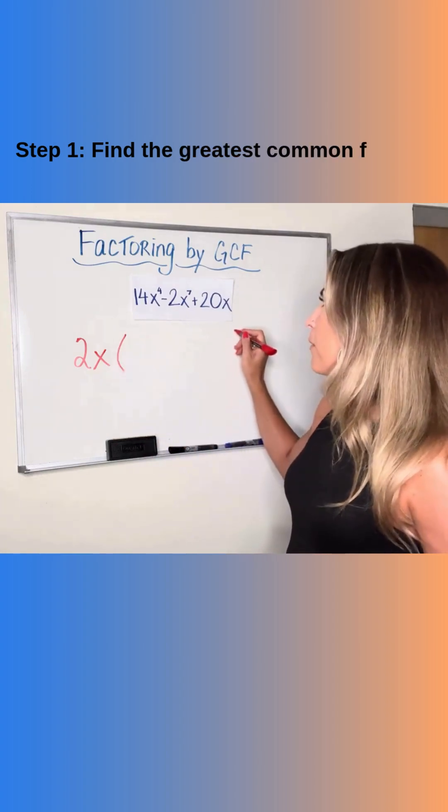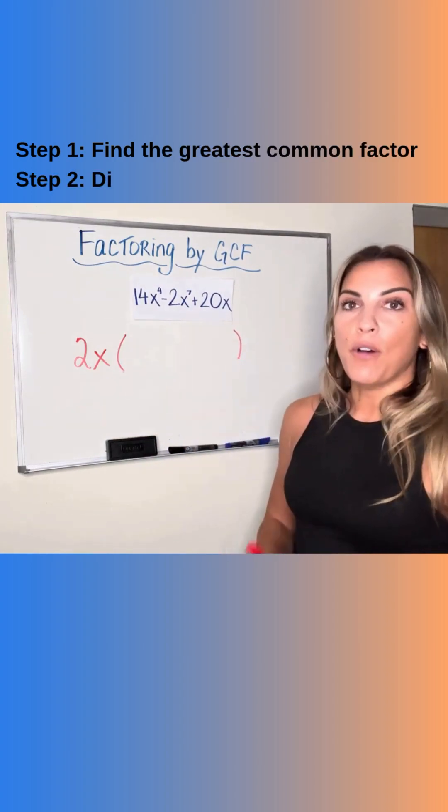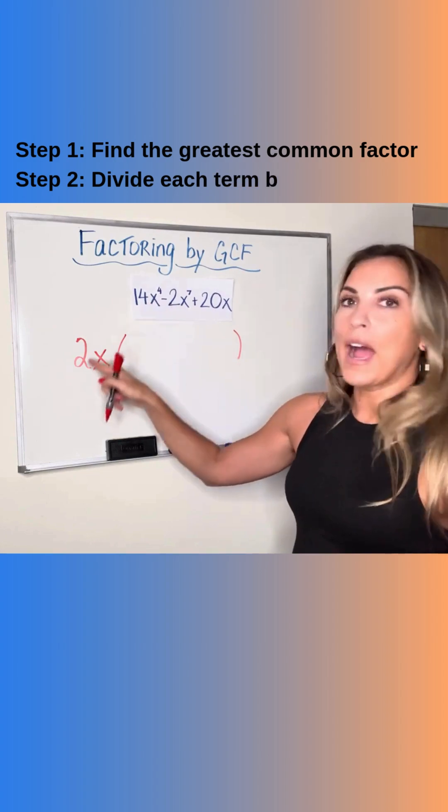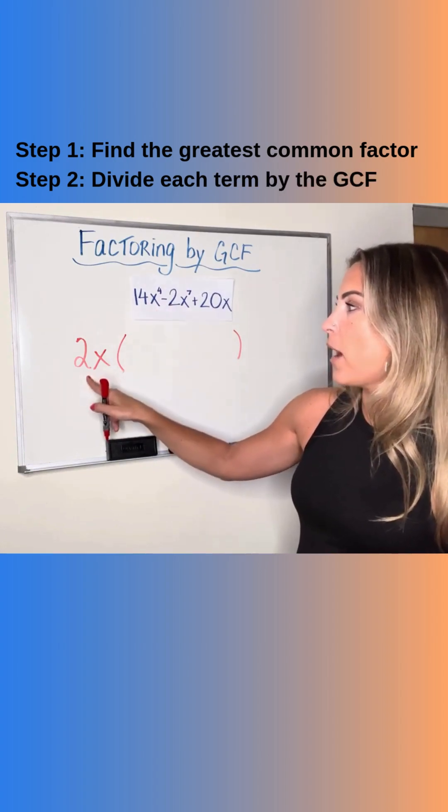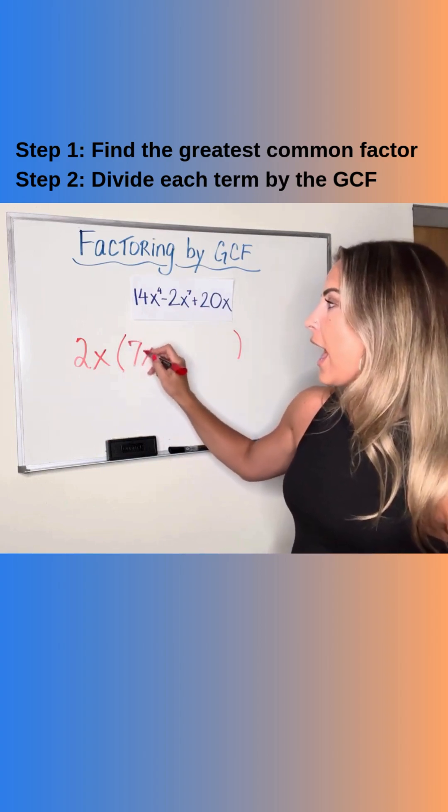Again, following that same last step, divide each term by the GCF. So 14x to the fourth divided by 2x is going to give me 7x to the third.